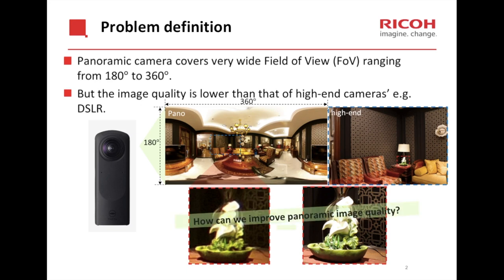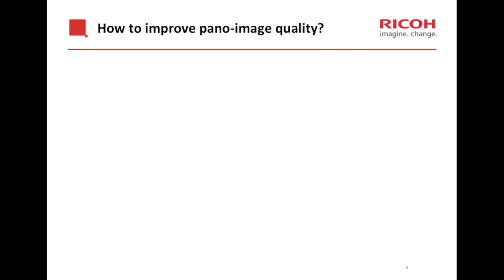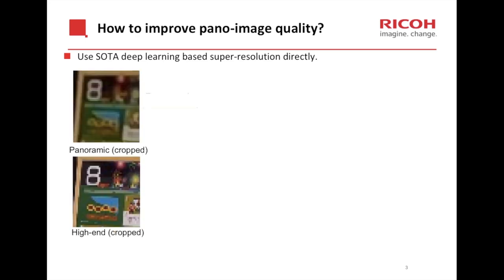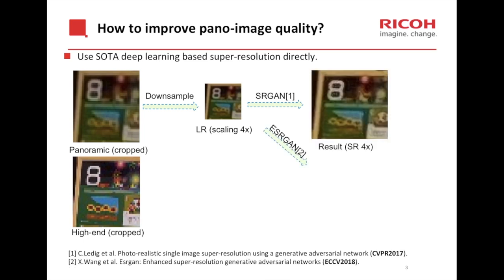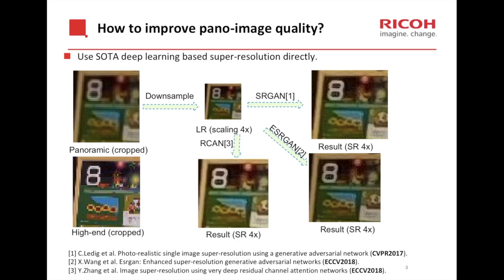So how can we improve the image quality of the fisheye camera? Can we improve it to the high-end camera level? How about using state-of-the-art deep learning-based super-resolution methods directly? For example, we can down-sample the original low-quality image to create a low-resolution image, then super-resolve it using methods such as SRGAN, ESRGAN, or RCAN using author-provided models and architectures. However, all of them fail to generate good results.